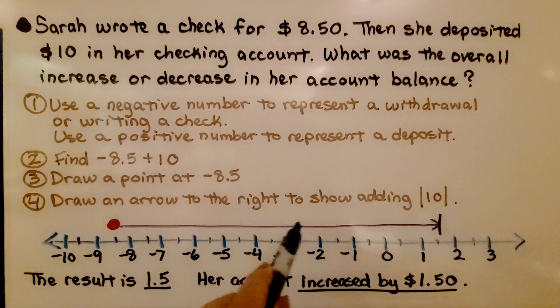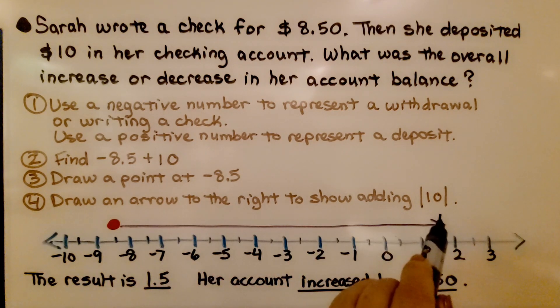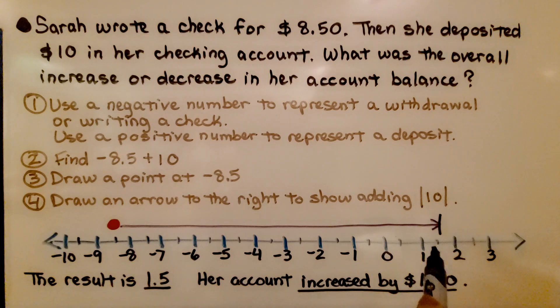We draw an arrow, going to the right to show we're adding a positive, and we're going to land at a positive 1.5. Our result is 1.5. That means her account increased by $1.50.